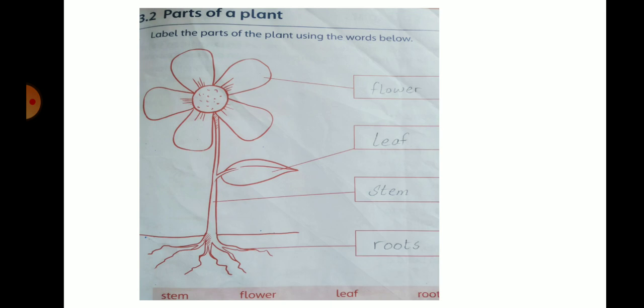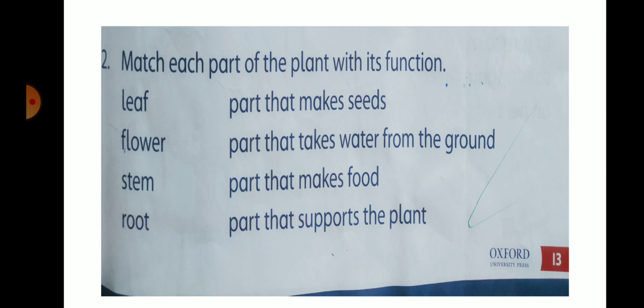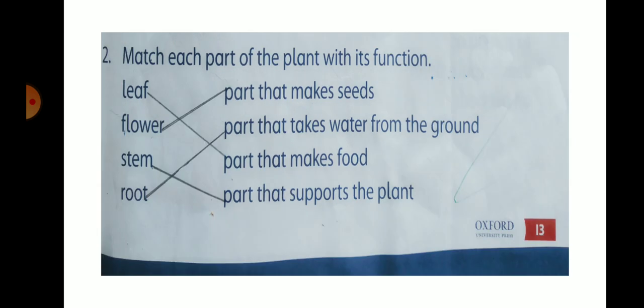Page No. 13 peh question No. 2 hai, match each part of the plant with its function. First column me parts of the plant hai and second column me function of plants hai. Aapni hai in dono ko match karna hai ke plant ka koon sa part, koon sa function perform kertai hai. So students, sibse peahle hai leaf. Leaf kya kama kertai hai? Part that makes food. Leaf jo hai, woh plants ka food bana ta hai.